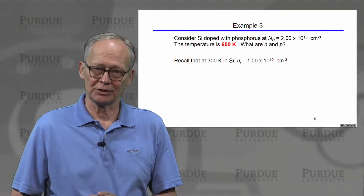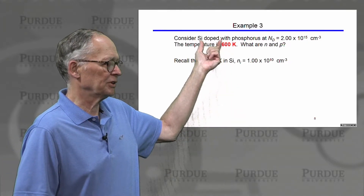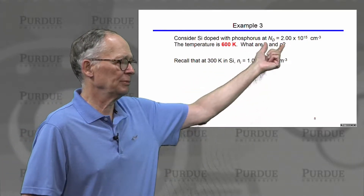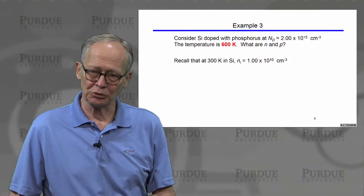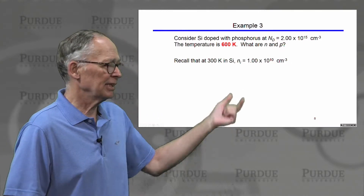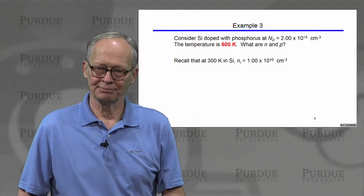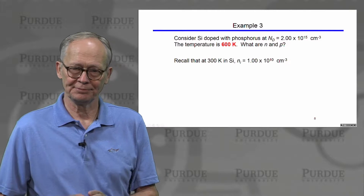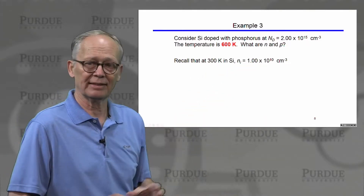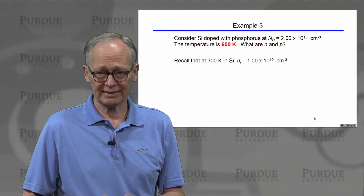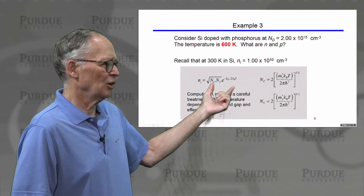Let's do an example. We have silicon doped with ND equal to 2×10¹⁵ donors per cubic centimeter, but let's make the temperature 600 Kelvin and see what happens — what are N and P? At 300 K, ni was 10¹⁰ and could be ignored, but at 600 K it will be significantly higher.